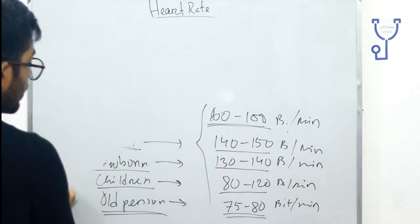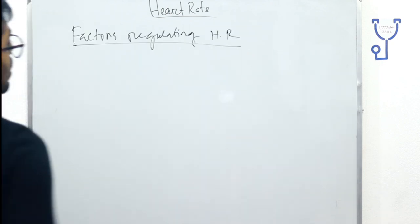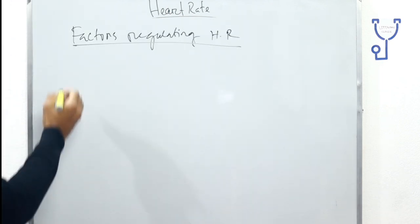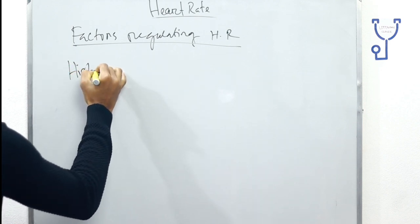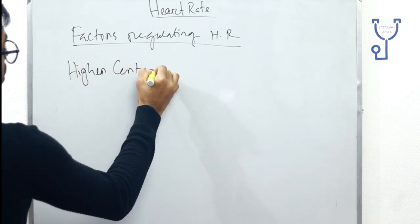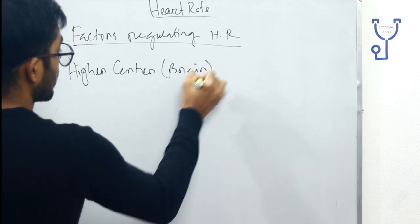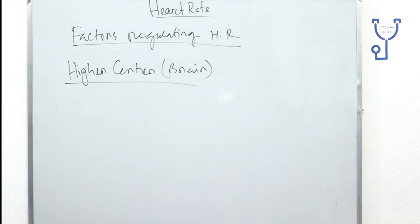Now, the factors regulating heart rate. First of all, the higher center, which is the brain. The brain is called the higher center and it directly regulates the heart rate.